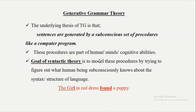The goal of syntactic theory is to model these procedures by trying to figure out what human beings subconsciously know about the syntactic structure of a language. The model or process describes how to understand or process the structure of language in the human mind — how we create and produce language. The goal of this theory is to figure out the subconscious set of human mind that generates syntax or structure of language.